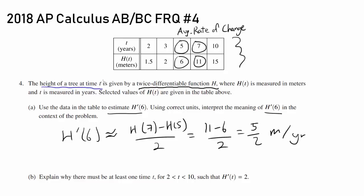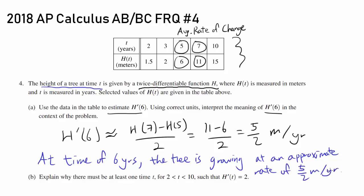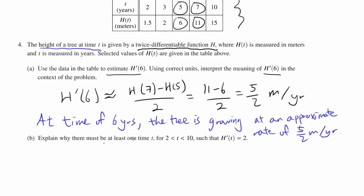H is the height of the tree at time t, so H' is going to be the rate of change of the height of the tree. So we can say at time of 6 years, the tree is growing at an approximate rate of 5/2 meters per year, because derivative is rate of change.